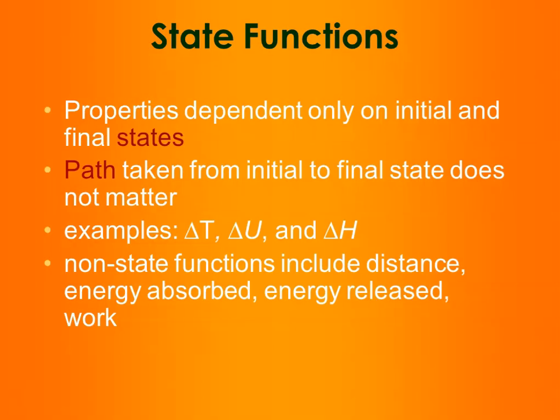State functions are a little bit different than other quantities. State functions are only interested in your initial state and your final state — they don't care about the path taken to get from point A to point B. Examples of state functions are delta U, delta H, and delta T. However, quantities where the path matters, like distance, are more extensive properties. Delta H is a state function, while heat Q is not, because depending on the type of change occurring, you may have to absorb or release energy before getting from point A to point B. Work also falls in this path-dependent category.